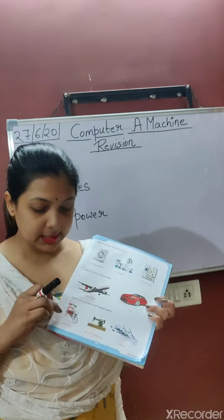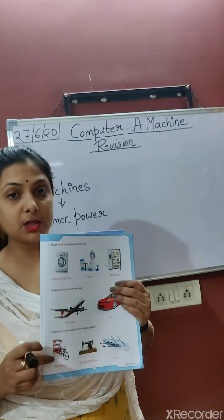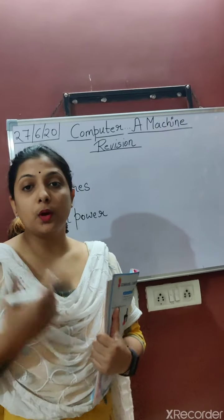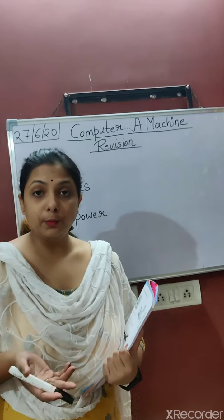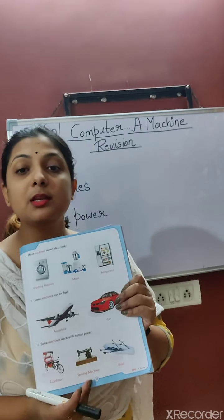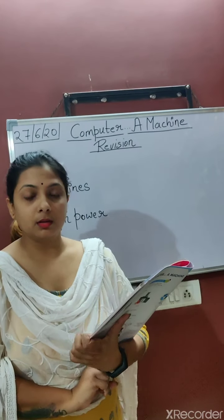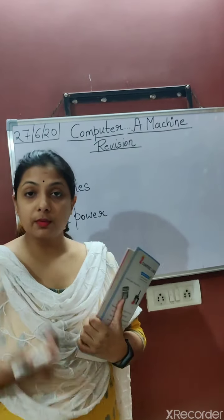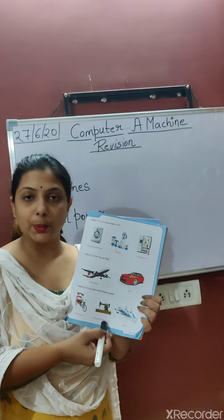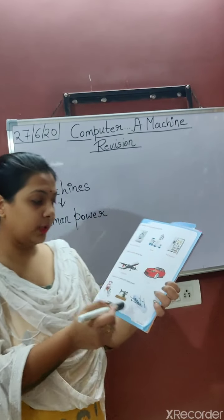Machines that work on human power — look at this picture. This is a rickshaw. Does it work on electricity or fuel? No. The second one is a sewing machine — the clothes we wear are stitched using this machine. And the third is a boat. All of these work on human power.